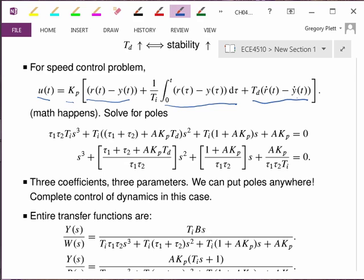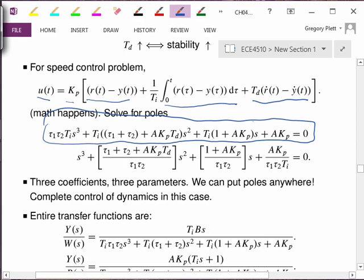But what we get for the closed-loop transfer function is this. I've got something times S cubed plus something times S squared plus something times S plus something equals 0. It's a little bit neater, perhaps, if we divide both sides of this equation by this leading term there, and we get this second form. Now, what this shows us, if you step back and look at it, is that with this motor example, my closed-loop transfer function has three poles. I started with two, but I added one because of the integrator. And so I've got a third-order polynomial, and the roots of that polynomial are where the closed-loop poles exist.